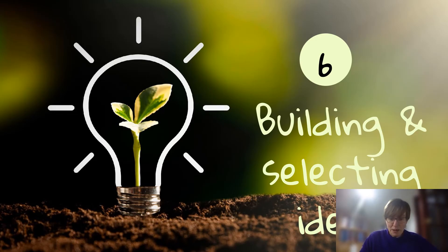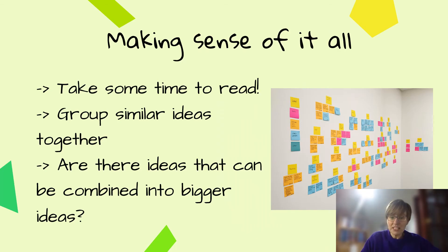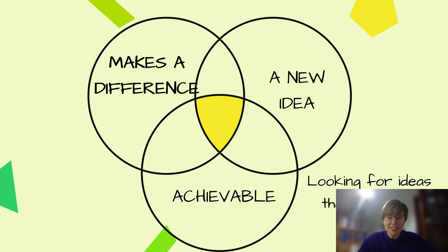The next section is about building and selecting ideas. We'll ask teams to read what all their peers have written down and group ideas together, potentially combining them into bigger ideas. They may need support and prompting on this. Then they need to pick an idea. The suggested criteria are: the idea can make a difference, it's a new idea — not new to the world, just something not already happening in their community, school, or group — and it's achievable for them as young people.